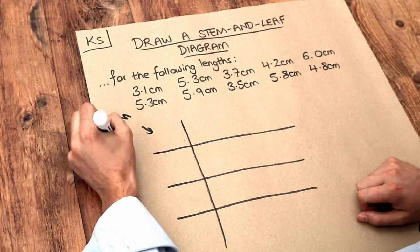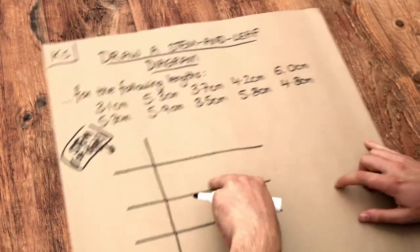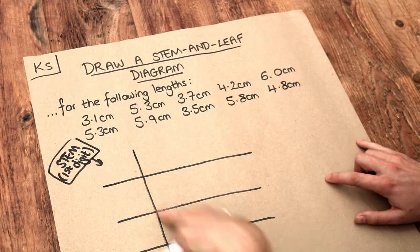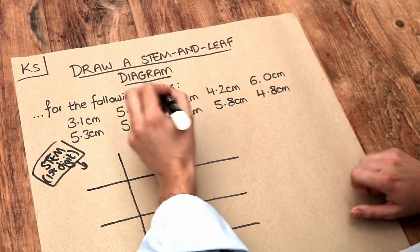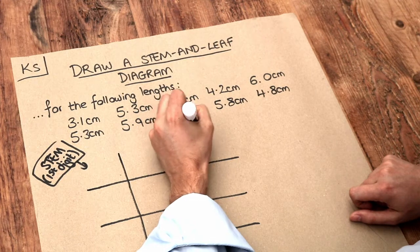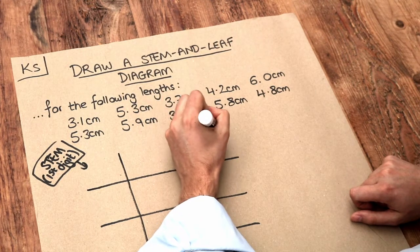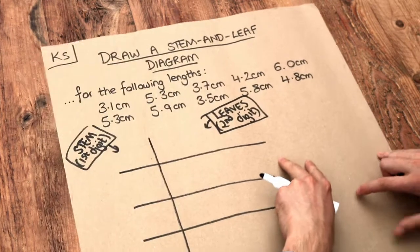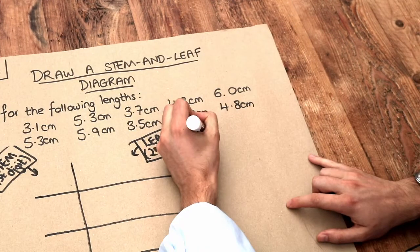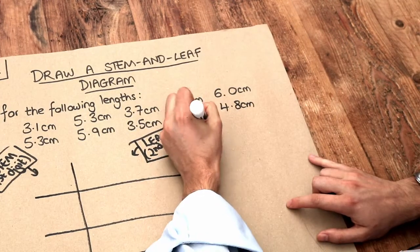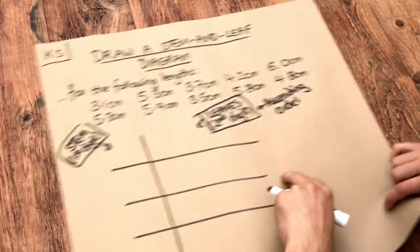The stem of each number is the first digit, and then on the right we're going to have the second digit of each number — these are known as the leaves. We need to have these in ascending order, so from smallest to largest.